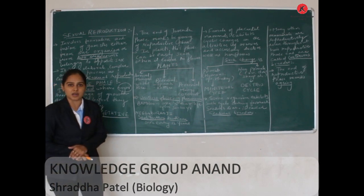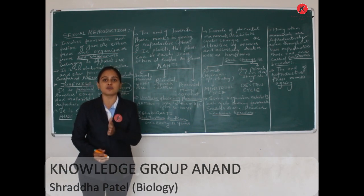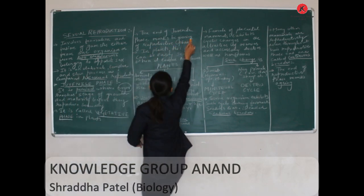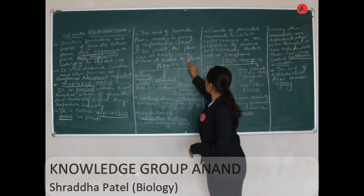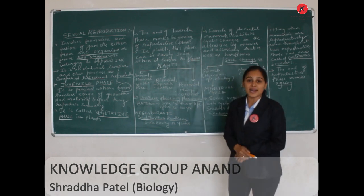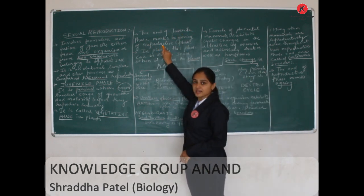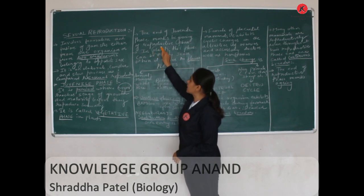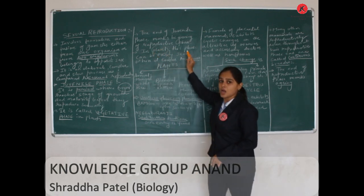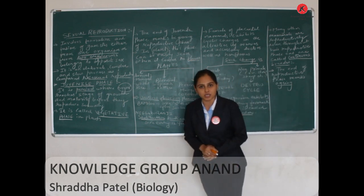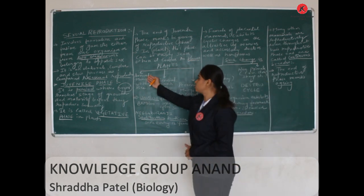Now, when does a plant enter the reproductive phase? It is very simple — when a plant produces a flower, that indicates the reproductive phase. The end of the juvenile phase marks the beginning of the reproductive phase, and this reproductive phase in plants can be easily identified when flowers appear. Depending on their flowering pattern, plants are classified into three categories.